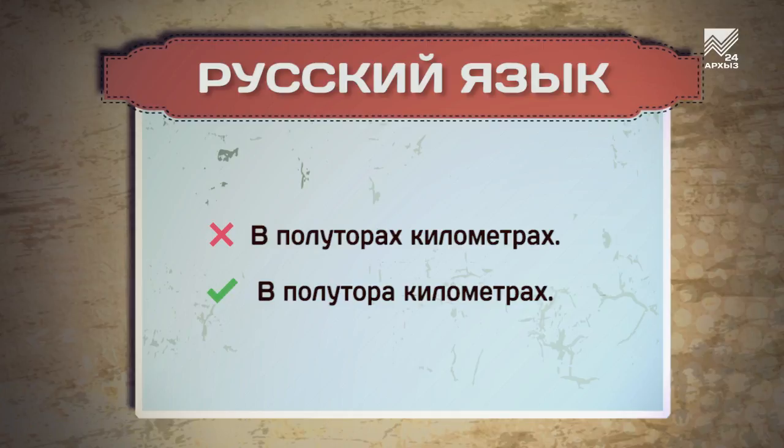В полутора километрах. Запомните, что числительное «полтора» употребляется лишь в трёх формах: полтора, полторы и полутора. Никаких «полуторах» или «полторах» не существует. У числительного «полтора» сразу две формы именительного падежа: в мужском и среднем роде — полтора, а в женском — полторы. Например: полтора литра молока, полторы недели.